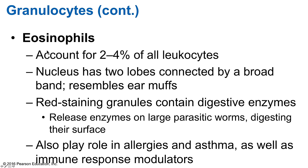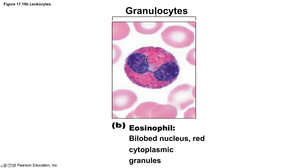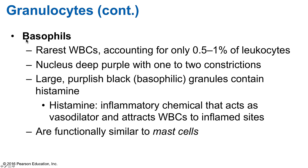Eosinophils get their name from the acid dye eosin that these cells pick up when blood is stained. They account for roughly 2–4% of all white blood cells and are the main cells that respond to allergies and parasites — most importantly, worms. They are easily distinguished as their nucleus has two lobes connected by a broad band of nuclear material, resembling analog telephones or earmuffs. The lysosome-like granules are filled with digestive enzymes effective against parasites. These cells reside in the loose connective tissue of the respiratory mucosa and intestines, where they surround parasites and release enzymes to digest them. They also play a role in allergies and asthma.